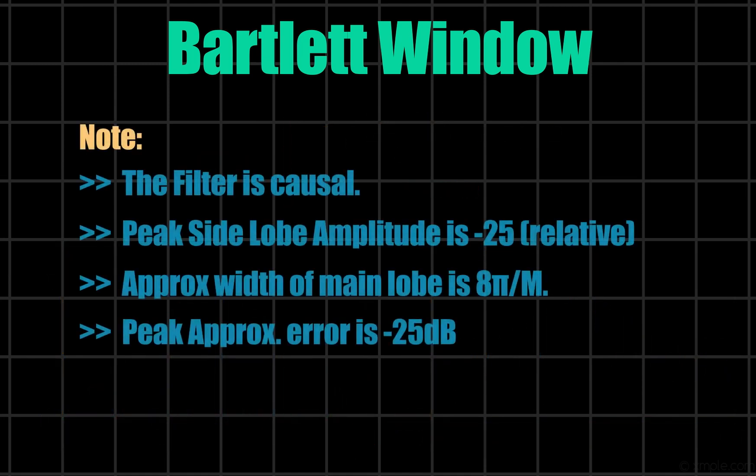Some note points: This is a causal filter. Peak side lobe amplitude is minus 25 relatively. Approximate width of the main lobe is 8 pi by m and peak approach error is minus 25 dB.